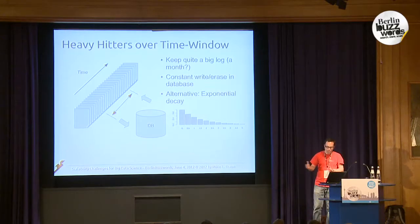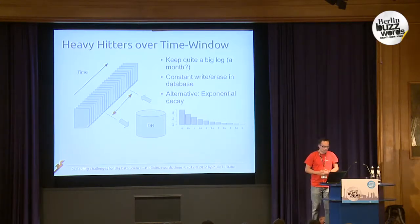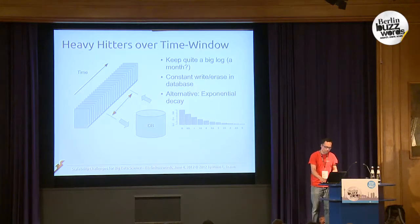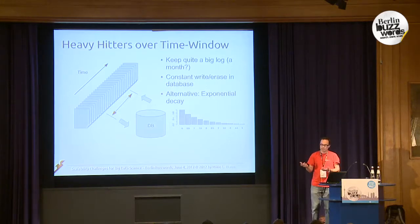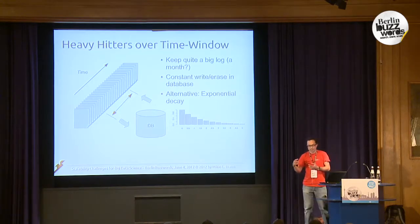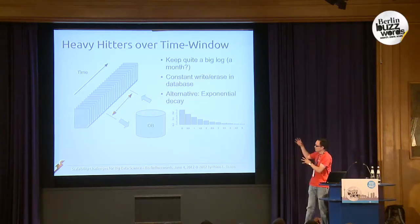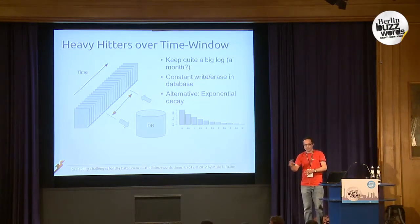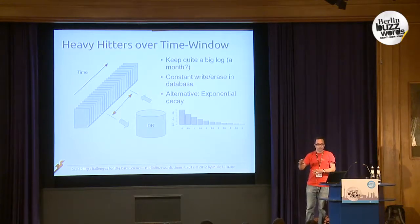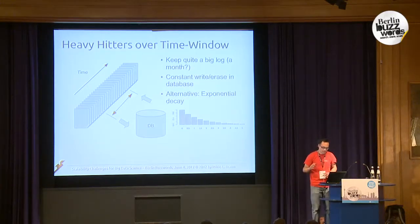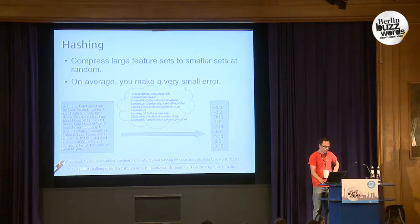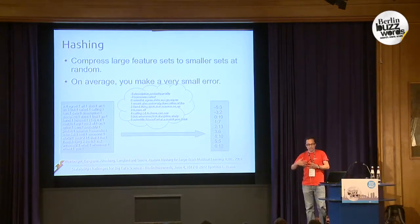That way you can have approximate counts of activities for a million objects over long time spans with a constant amount of processing power. You can also access results instantaneously — these data structures are such that at any point in time you can just say 'give me the top 10' or 'top 100' and you have the results immediately.